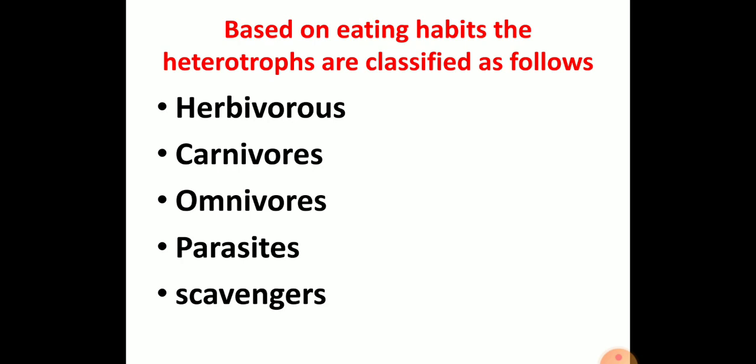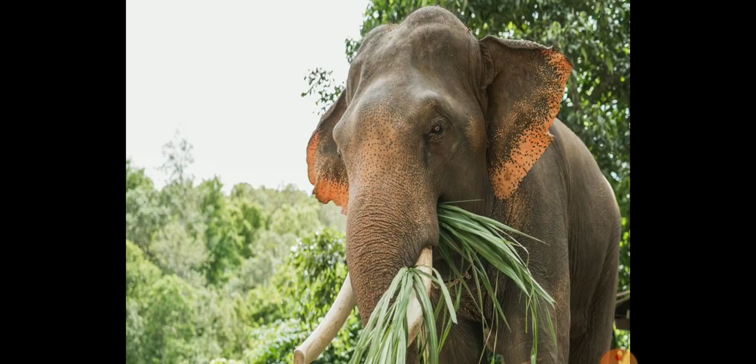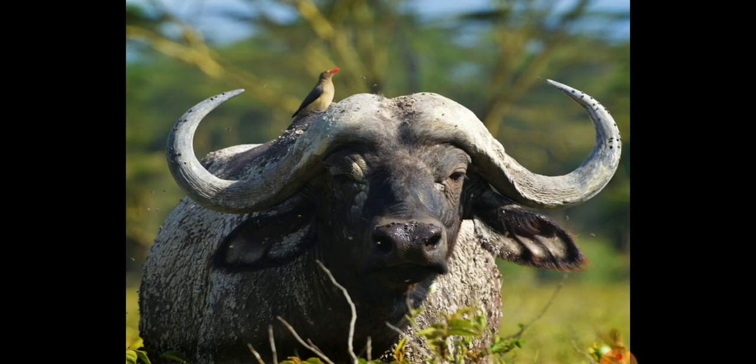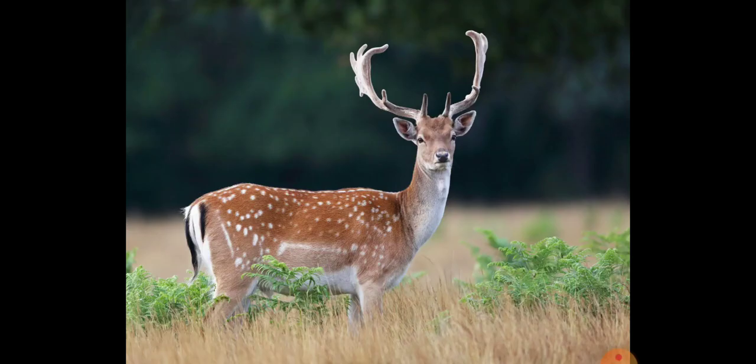Animals are classified on the basis of eating habits. They are herbivores, carnivores, omnivores, parasites, and scavengers. Animals that only eat plants or plant products are known as herbivores. For example, cow, elephant, buffalo, zebra, and deer are examples of herbivore animals.